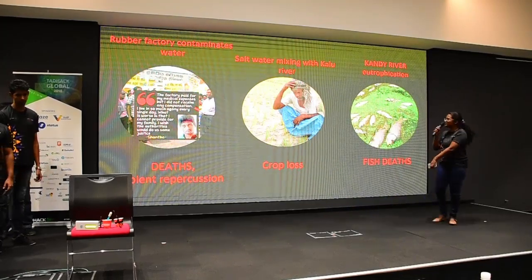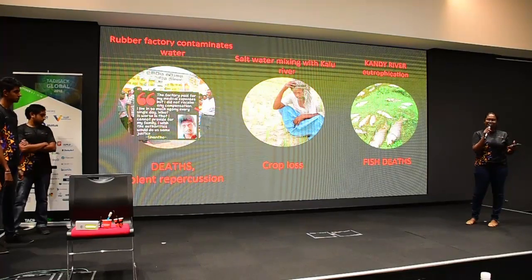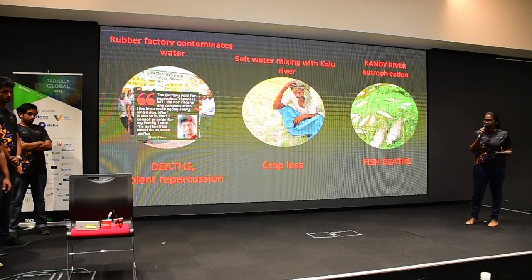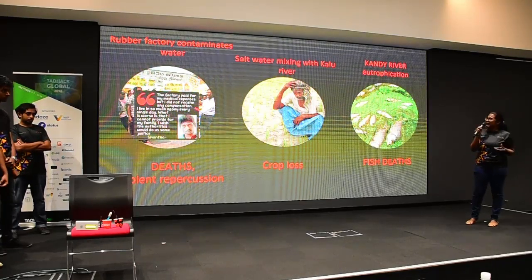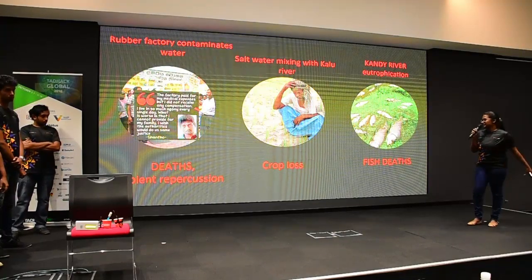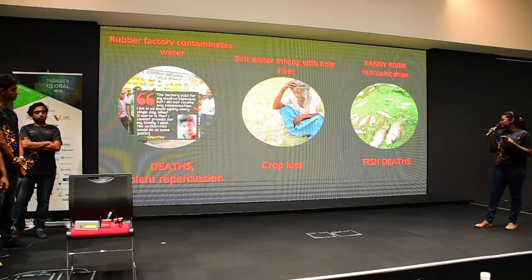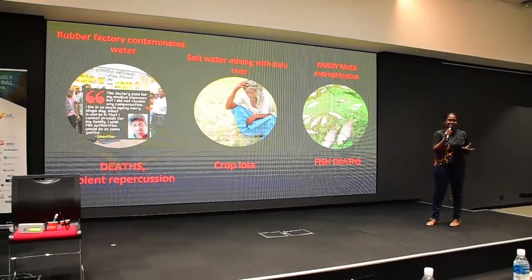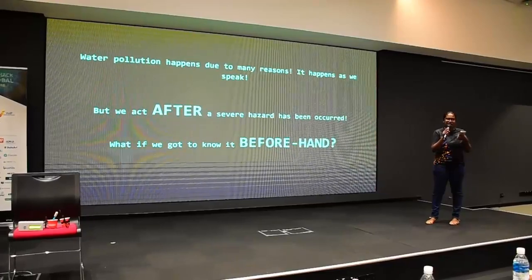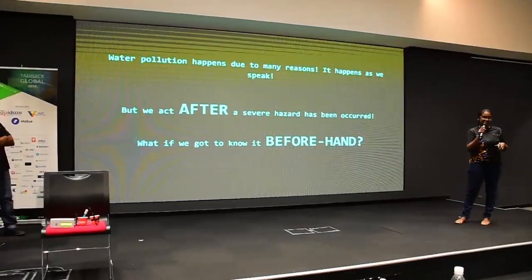Let's move on to the first slide. We can see — if you can remember the Rautoponsville incident which happened recently — the rubber factory contaminated big water, causing lead and violent repercussions. The soil water mixing with the Kalagoga introduced crop loss, and the Kandy River repercussion introduced fish leads. All these situations affected us, and we understood that such pollution was happening after the hazard had been done, not before.